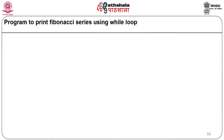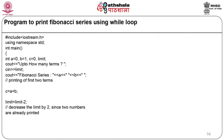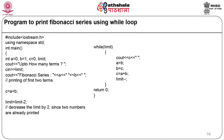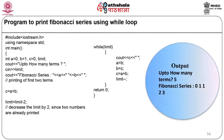A Fibonacci series program uses a while loop. Variables a=0, b=1, c=0, and limit are declared. The user enters how many terms. The first two terms (a and b) are displayed. c = a+b; limit -= 2 (because two numbers are already printed). Loop: while (limit) { cout c; a=b; b=c; c=a+b; limit--; }. For input 5, the output is 0 1 1 2 3.